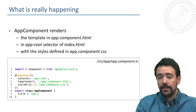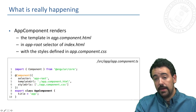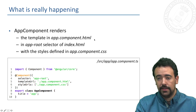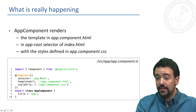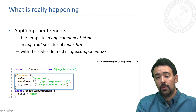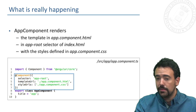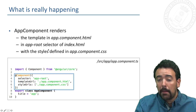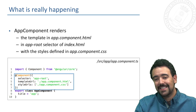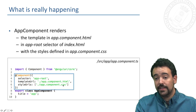This main component, the application component, renders the template that is defined in its template file, application component dot HTML, in the selector of index HTML defined in the metadata. We can see here in the component metadata that this component should be rendered in the corresponding HTML tag, and finally the component applies the styles defined in the application component CSS class to the rendered view. Of course these things are configurable and we can set them here in the component.